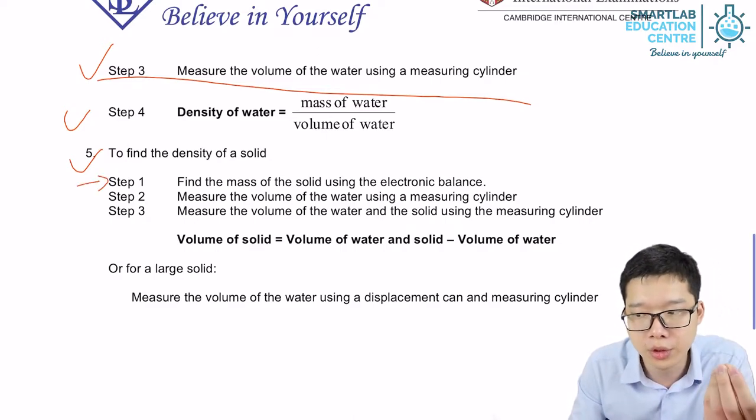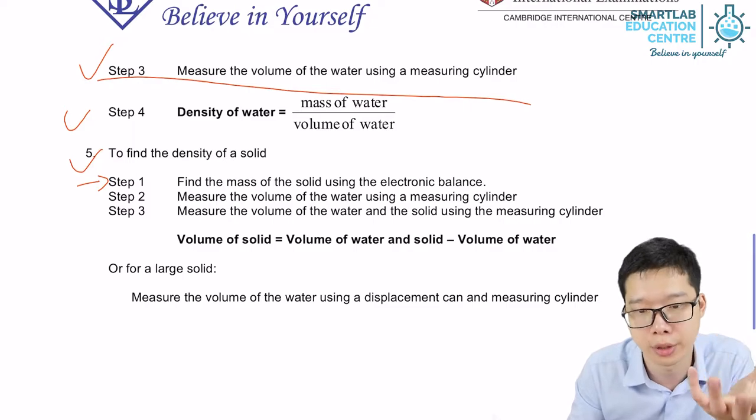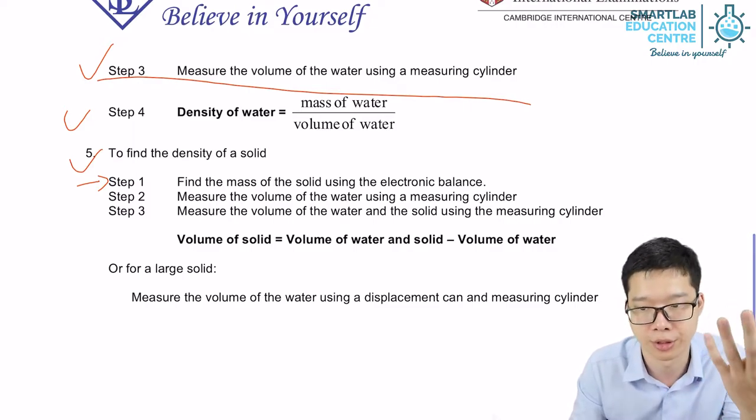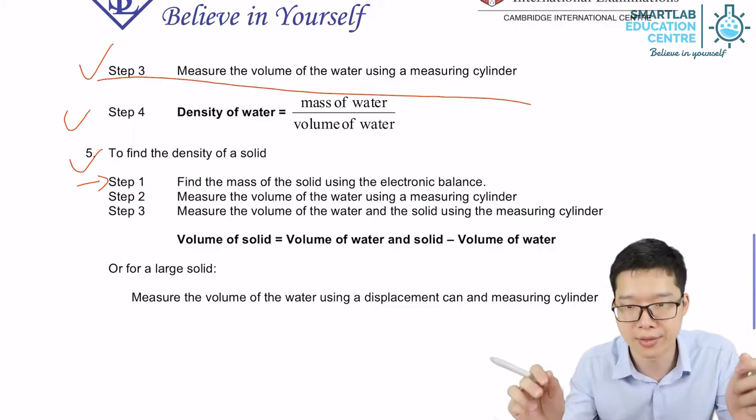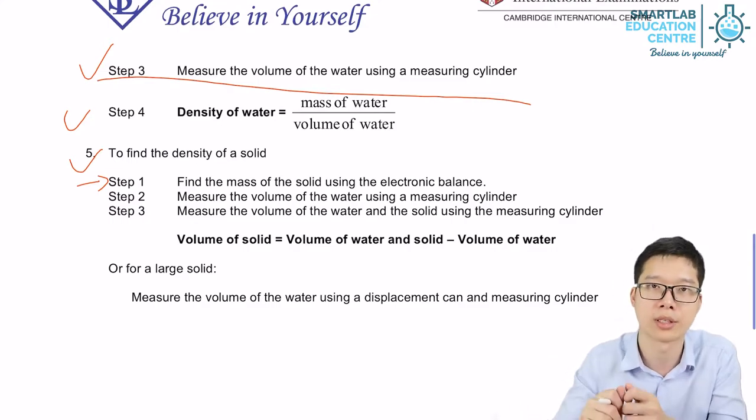Then how are you going to find the volume of a sometimes irregular shape solid? If it's a regular shape, we measure the length, we measure the width, we measure the height, we can apply the formula, we find the volume.